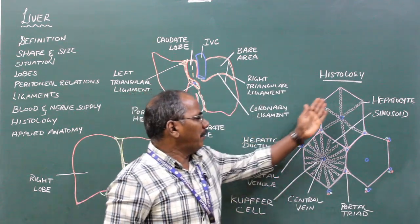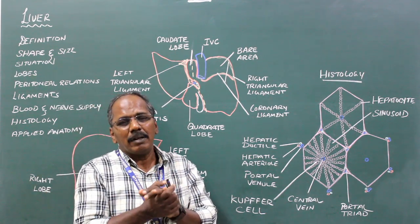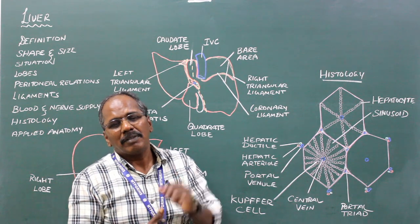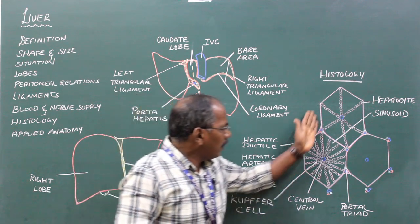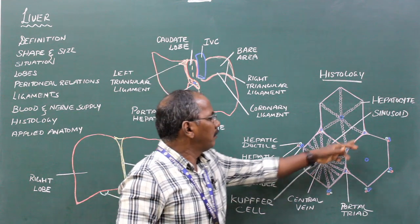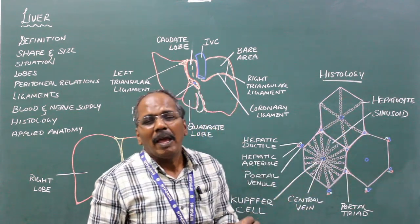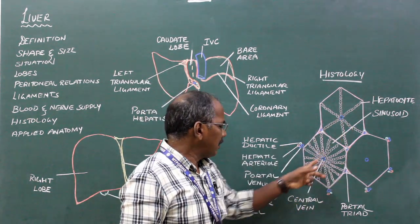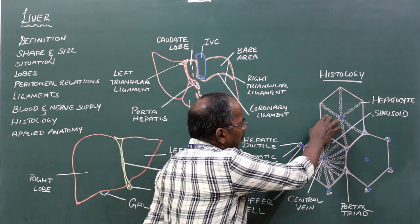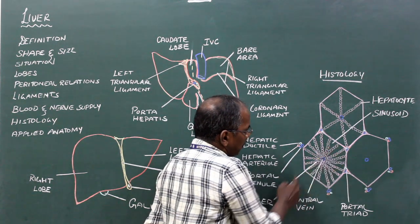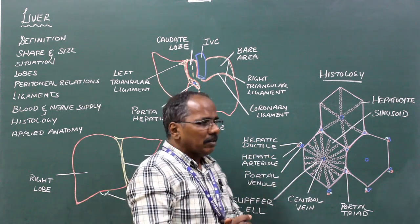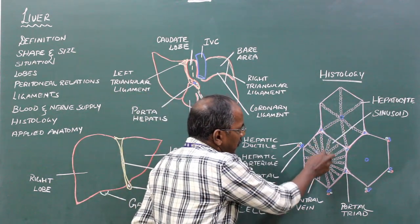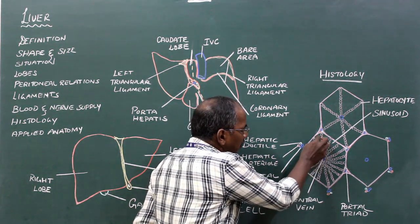Histology or microscopic structure of the liver. The liver surface is covered by peritoneum. The outermost layer is an outer fibrous capsule or fibrous tissue, which is the outer peritoneum covering. The parenchyma of the liver is made up of a number of lobules which are hexagonal in shape. Each lobule has a central vein with radiating sinusoids, which are formed between the cords of hepatocytes — the liver cells.